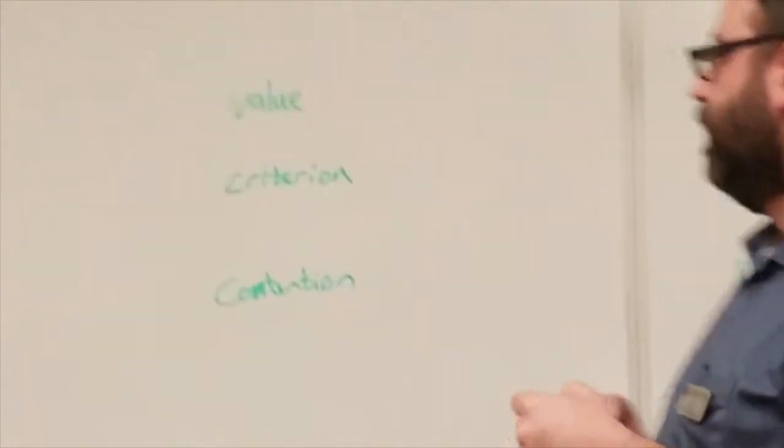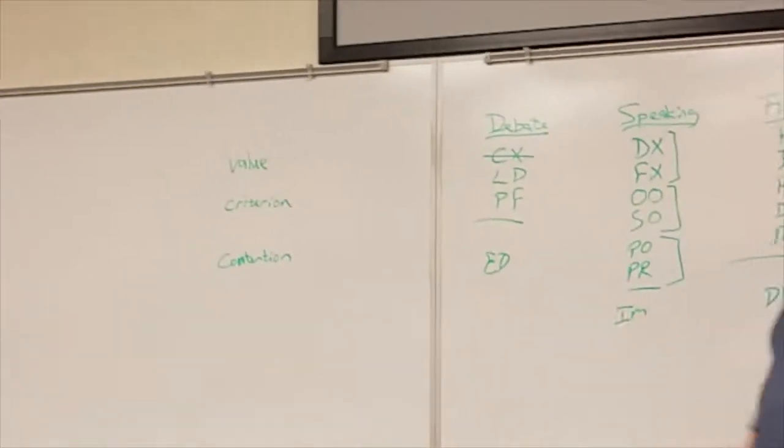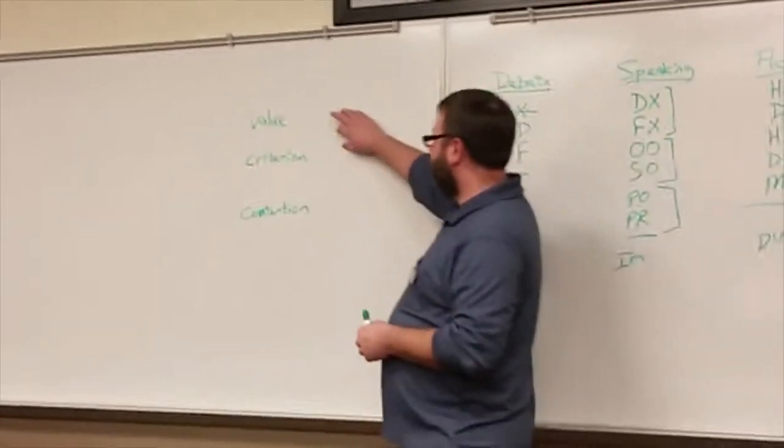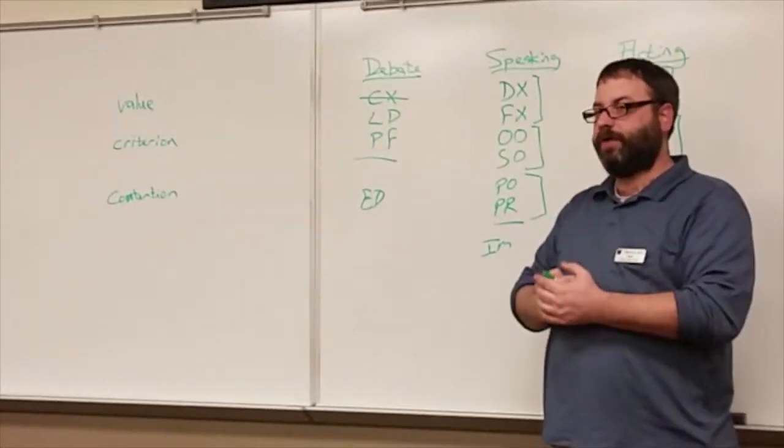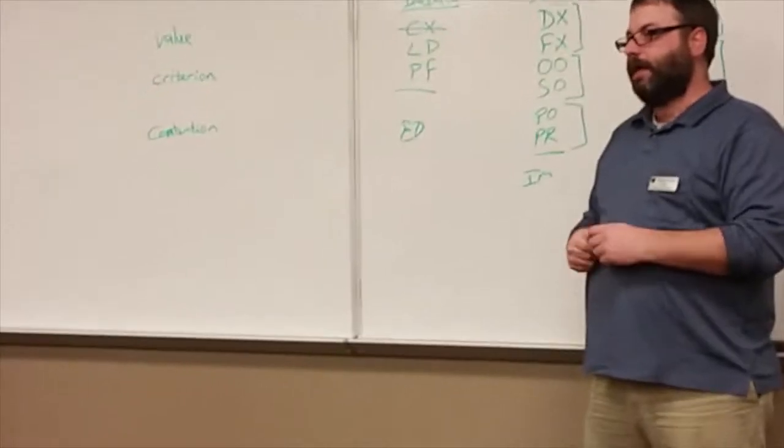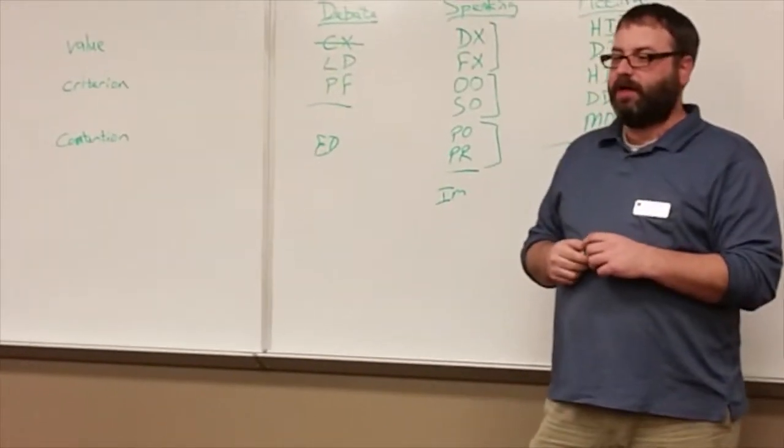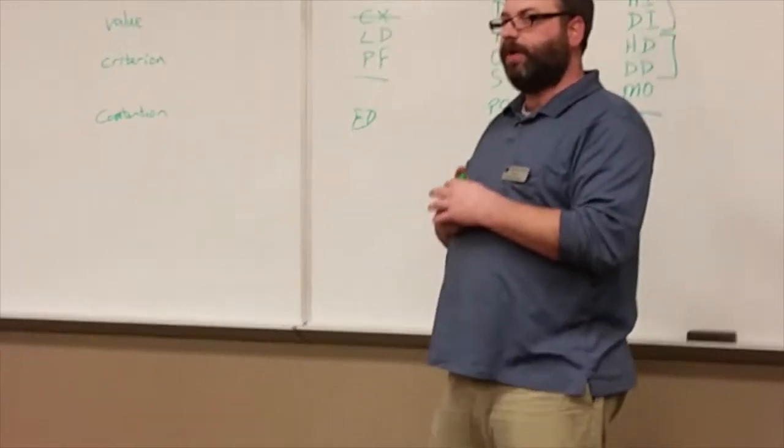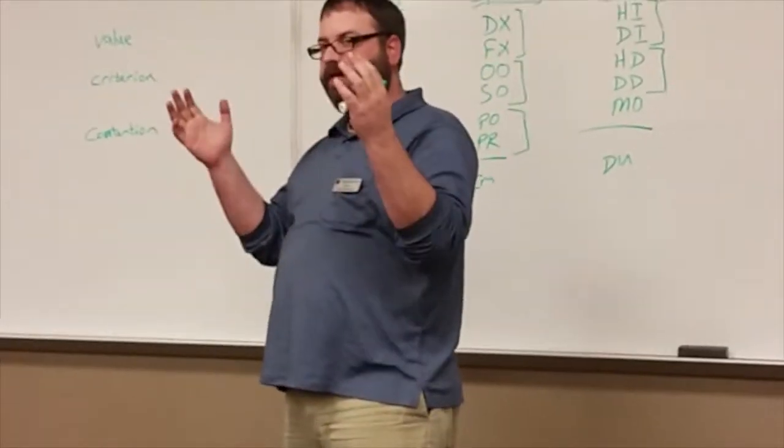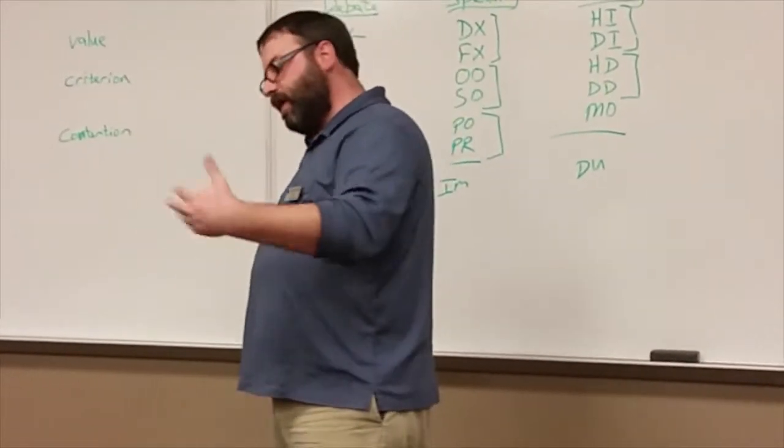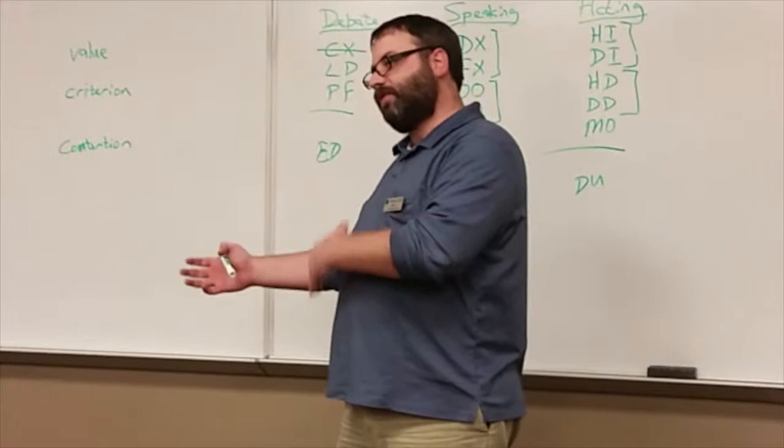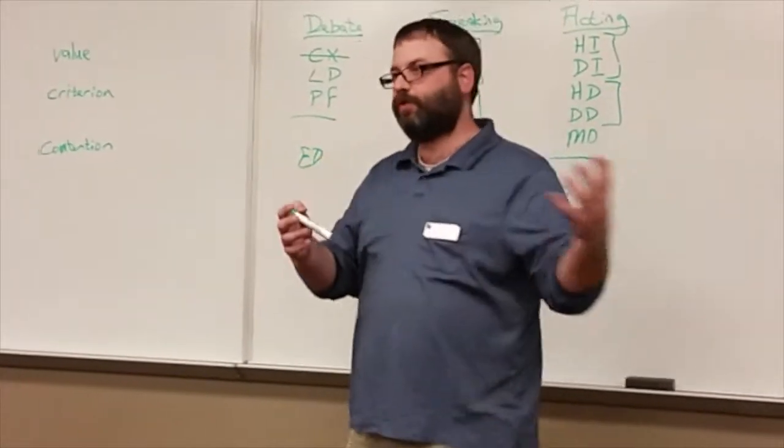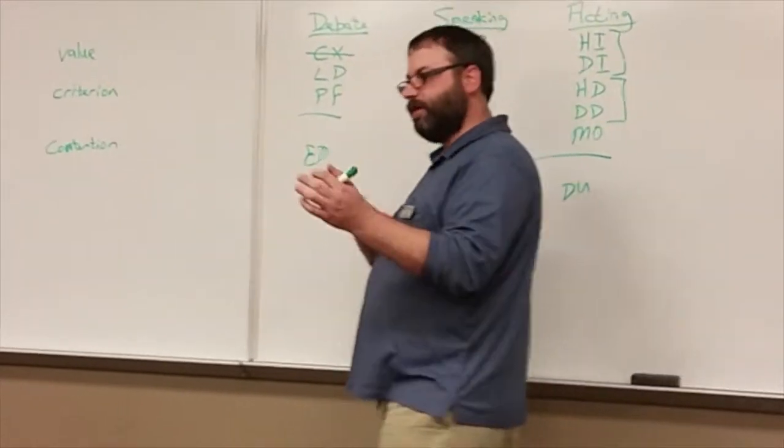Generally speaking, when one side presents their case in Lincoln Douglas they're going to present a value. Here's my value for the debate. Here's what I think is the most important thing that we should be trying to achieve. With this living wage topic, an example would be societal welfare. It's important that our goal needs to be, our overarching value needs to be, societal welfare. If we require employers to pay a living wage then society as a whole will be better off. And then the other team is going to get up and say 'no, no, my value is individualism or free market economy,' something like that and they'll try to talk about that.